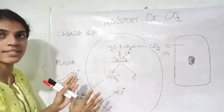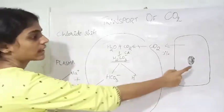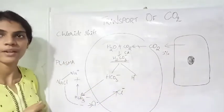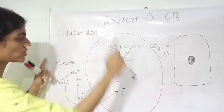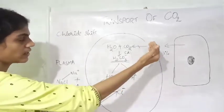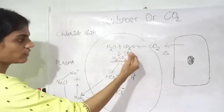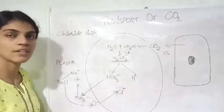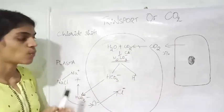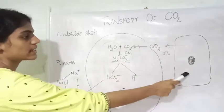This is what happens when the blood is near the cell. All this process—the diffusion of carbon dioxide, the formation of bicarbonate ions, this chloride shift—everything happens when the blood is near the cell.